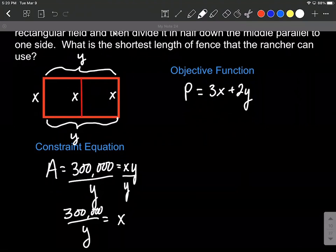I'm going to take that over to our objective function and I get 3 multiplied by 300,000 over y plus 2 y's.